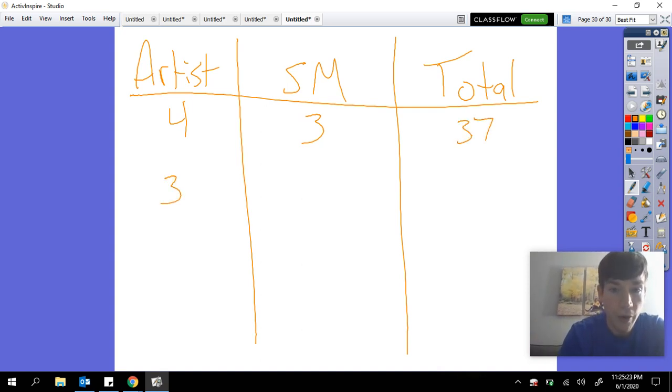So for example, just a pure guess: what if I said that an artist was 5? I would do 4 times 5 is 20. And then what if I said a stonemason was 3? Just a guess.